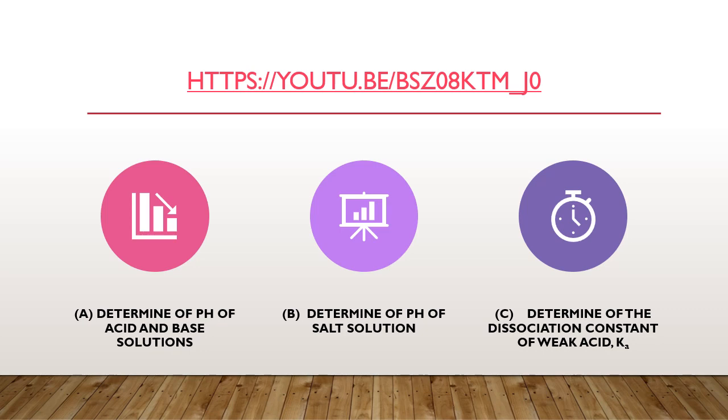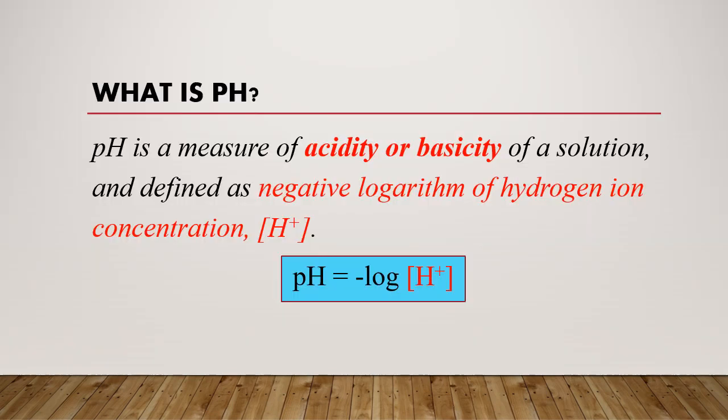The first question: what is pH? So pH is a measure of acidity or basicity of a solution and defined as negative logarithm of hydrogen ion concentration or hydronium ion. So you can represent the formula: pH equal to negative log concentration H plus.